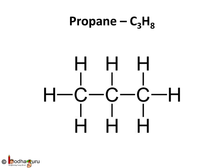Now, this is propane, and here 3 carbon atoms form a chain. Then each carbon atom tries to achieve 8 valence electrons by forming single covalent bonds with hydrogen atoms.